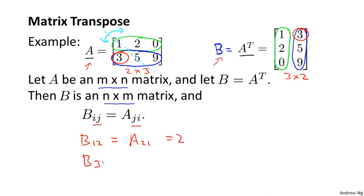And another example, B_32, that's B_32, which is this element nine. And that's equal to A_23, which is this element up here, nine. And so that wraps up the definition of what it means to take the transpose of a matrix.